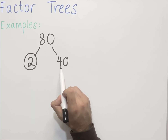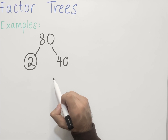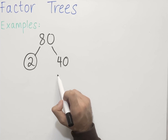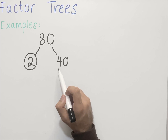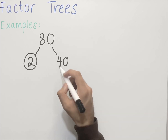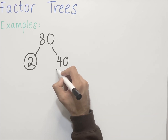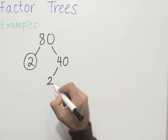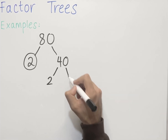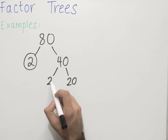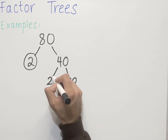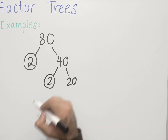40 is not a prime number, so we need to carry on factorizing it. Two numbers that multiply to make 40: we can use 2 and 20. 2 times 20 gives us 40. 2 is a prime number, so we can circle it.